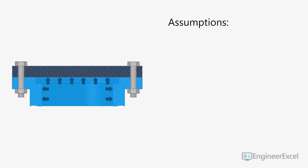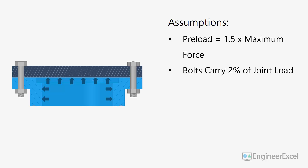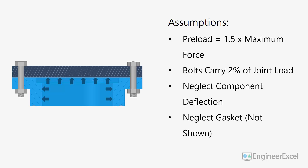To simplify the problem a little bit, I've also made some assumptions. We'll assume that the preload is equal to 1.5 times the maximum force. We'll also assume that the bolts carry 2% of the joint load — as the joint tries to separate, some of the load is carried by the pressure vessel components themselves and some is carried by the hardware, so we'll just assume the portion of the load in the bolts is 2%. We'll neglect component deflection and assume that everything is rigid. We'll also neglect the gasket, and finally we'll assume that the joint uses grade 8 fine threaded hardware.